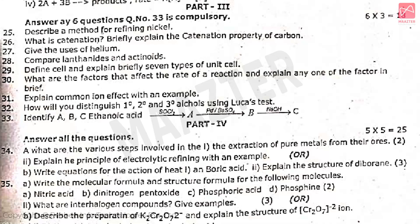Part three: three mark question section — total six questions, attend five; question number 33 is compulsory. Total 18 marks. First: describe a method for refining nickel. Then what is catenation — briefly explain the catenation property of carbon. Then uses of helium. Compare lanthanides and actinides. Then define a unit cell and briefly explain the seven types of unit cells. Then what are the factors that affect the rate of a reaction and explain one factor in brief. Then the common ion effect with an example. Then how will you distinguish primary and secondary alcohols using Lucas test. Then identify products A, B, and C.